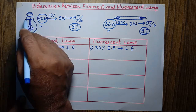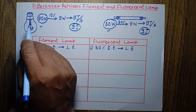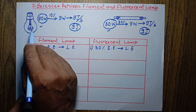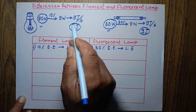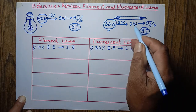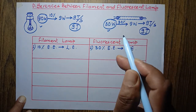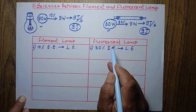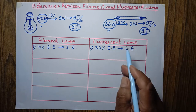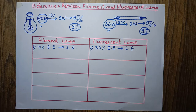It means if we are using a 90-watt filament lamp, it consumes 90 joules of electrical energy per second to give the same light as a 30-watt fluorescent lamp, which consumes just 30 joules per second to convert into 9 joules of light energy. That's why the fluorescent lamp is preferred for use at home — consuming less electrical energy, it gives the same amount of light.